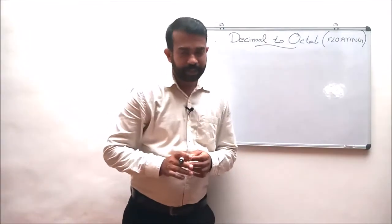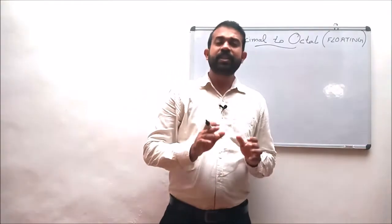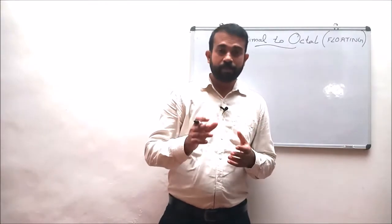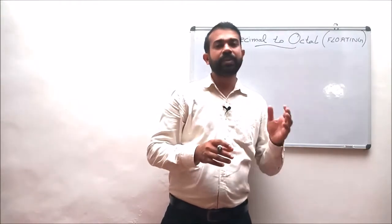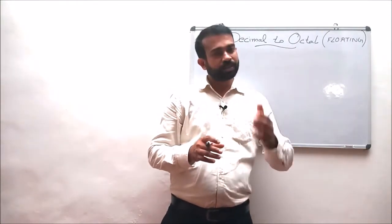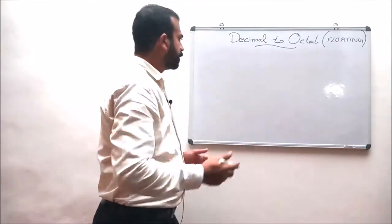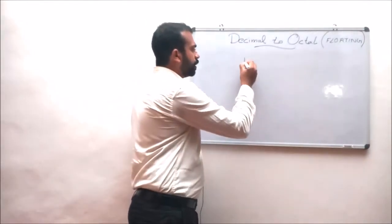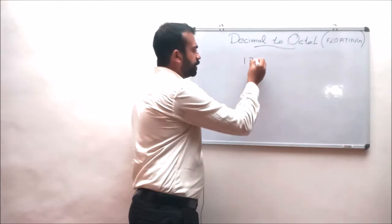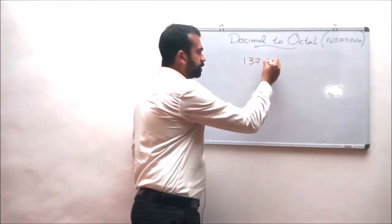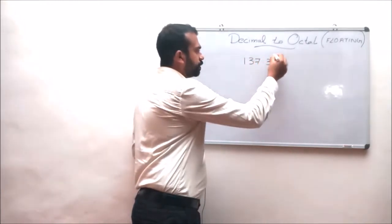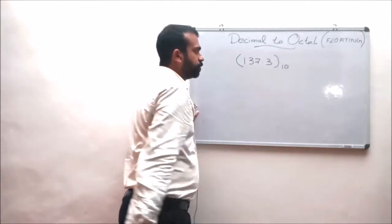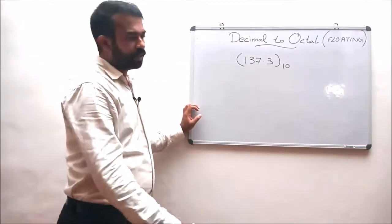Hi students, I'm Priven Sebastian Paul. In this lecture we are discussing how to convert a floating point decimal number into its octal equivalence. So let us consider an example. The example is 137.3 to the base 10 into its octal equivalence.